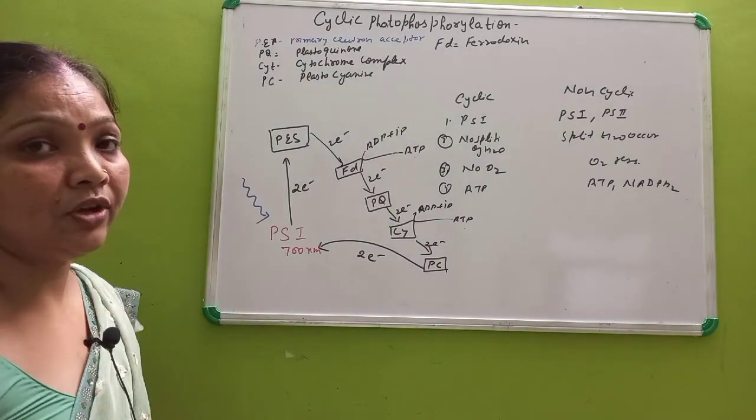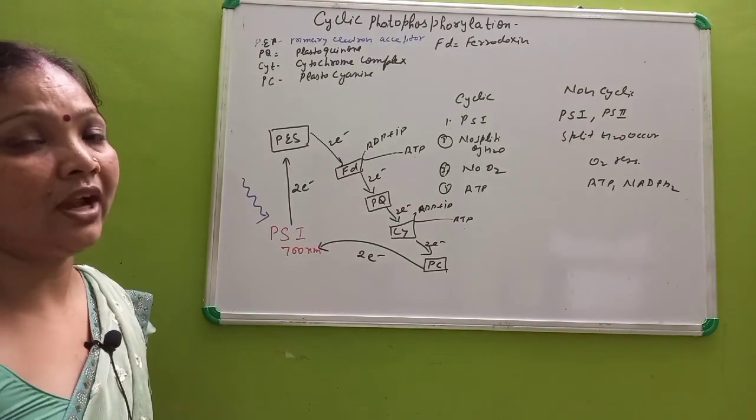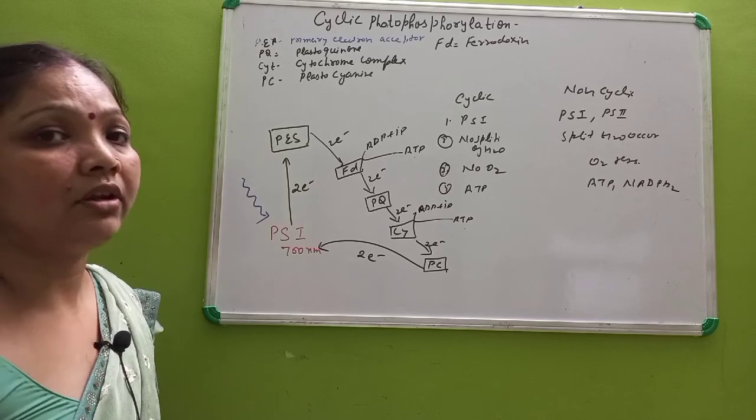So non-cyclic photophosphorylation is more important in comparison to cyclic because oxygen is also released due to the splitting of water, and formation of NADPH2 is also taking place that is used in dark reaction.